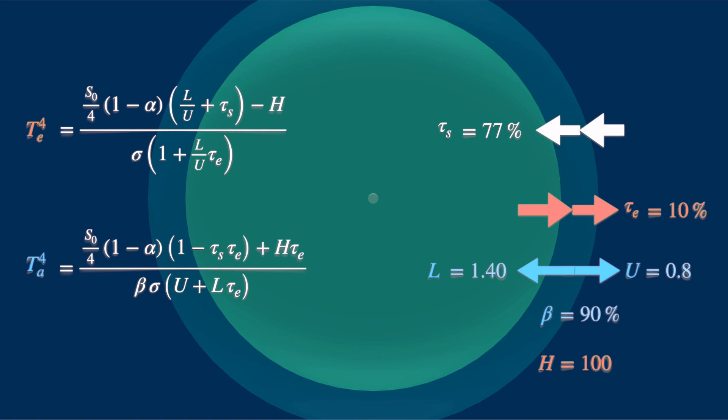If you plug in these values into the two expressions, you will get 291 Kelvin for T underscore E, which is 18 degrees centigrade, close to the average surface temperature of 15 degrees.